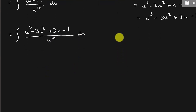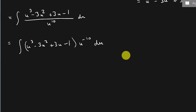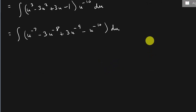So I can replace u minus 1 cubed with this, giving us u cubed minus 3u squared plus 3u minus 1, all over u to the 10th, du. Now it looks like it's getting somewhere. I can move u to the 10th up as u to the negative 10, multiplied through, giving me u to the negative 7 minus 3u to the negative 8 plus 3u to the negative 9 minus u to the negative 10, du. Now we've turned it into something simple we can apply the power rule to.